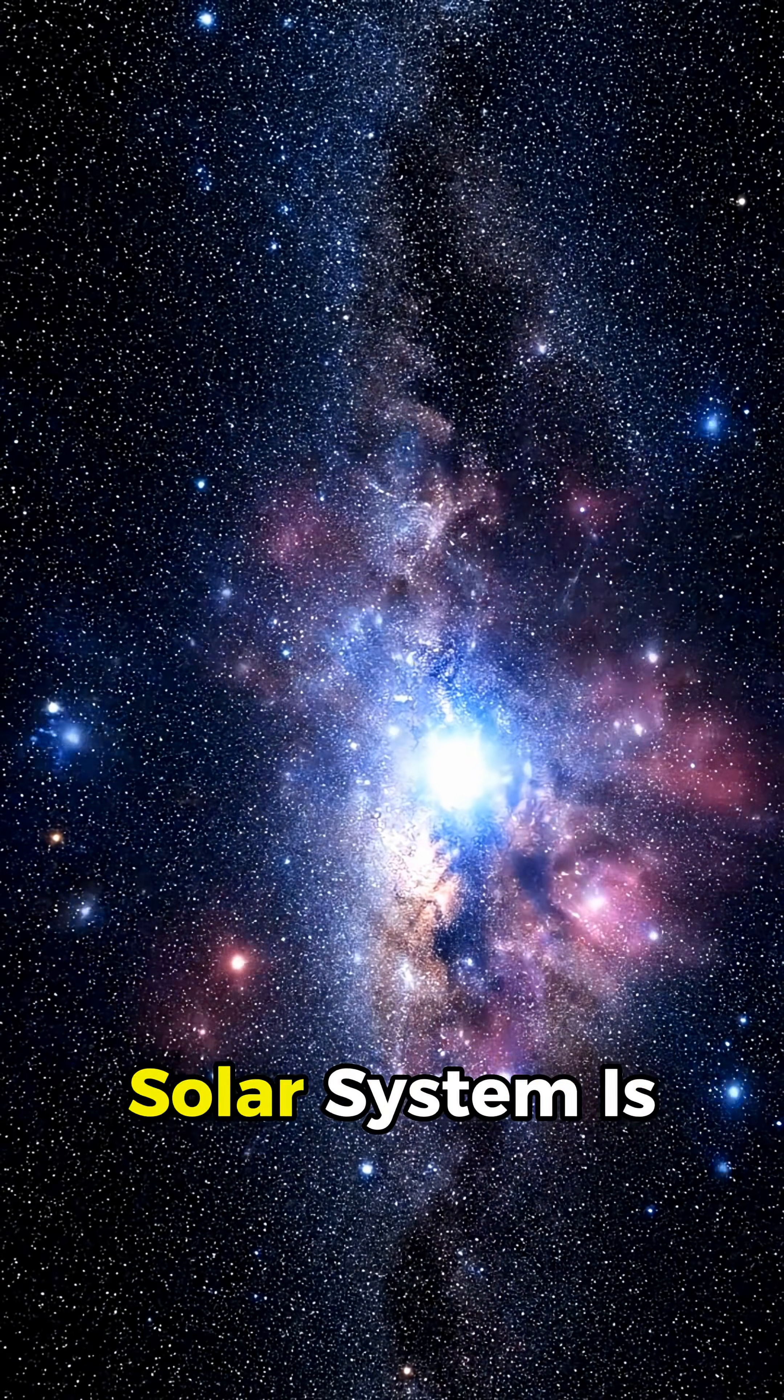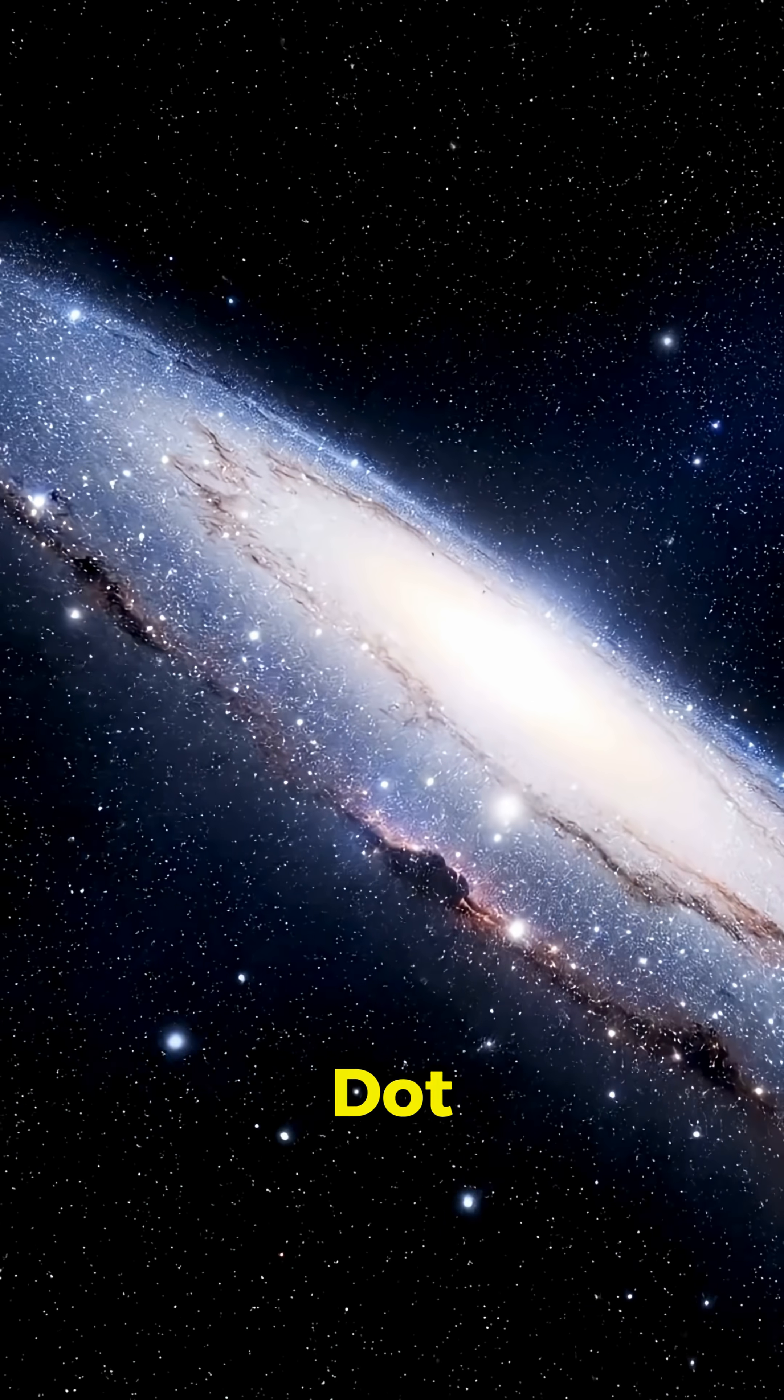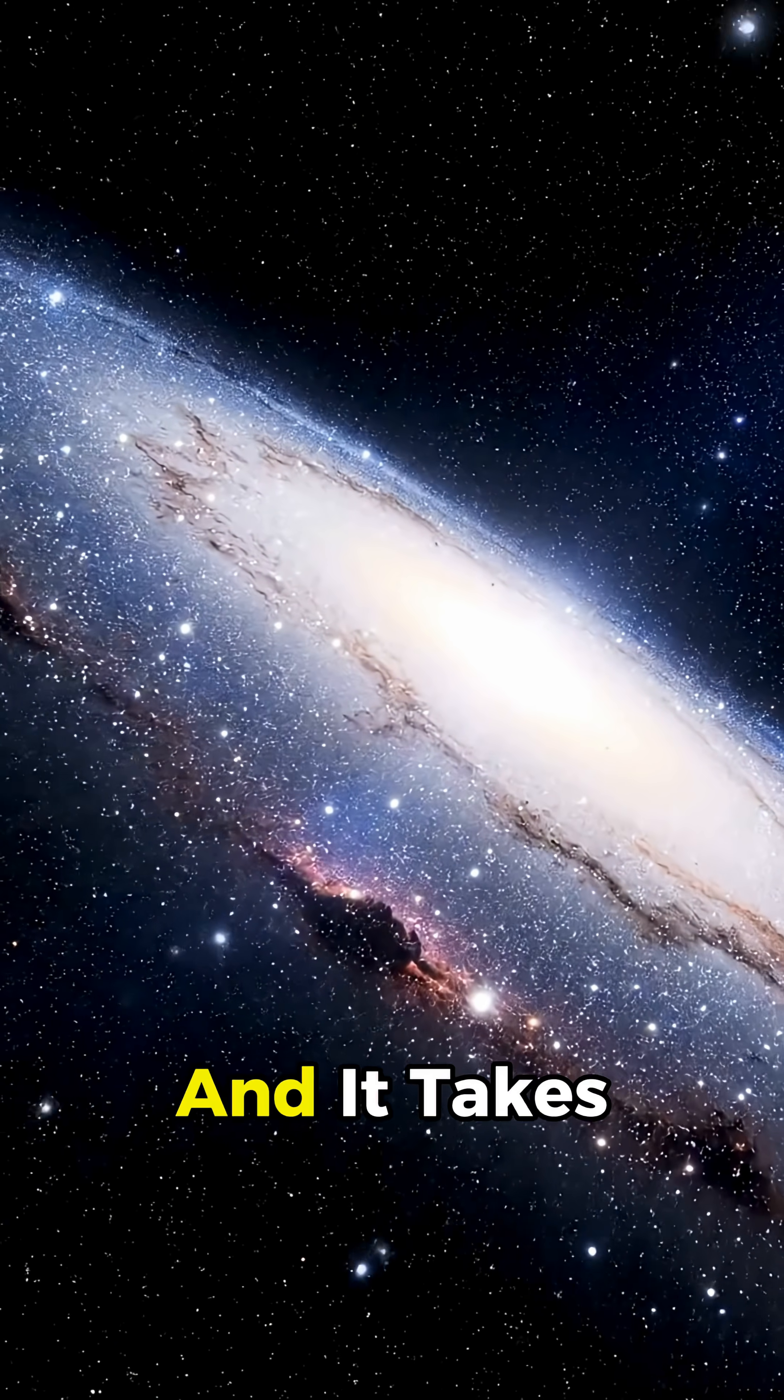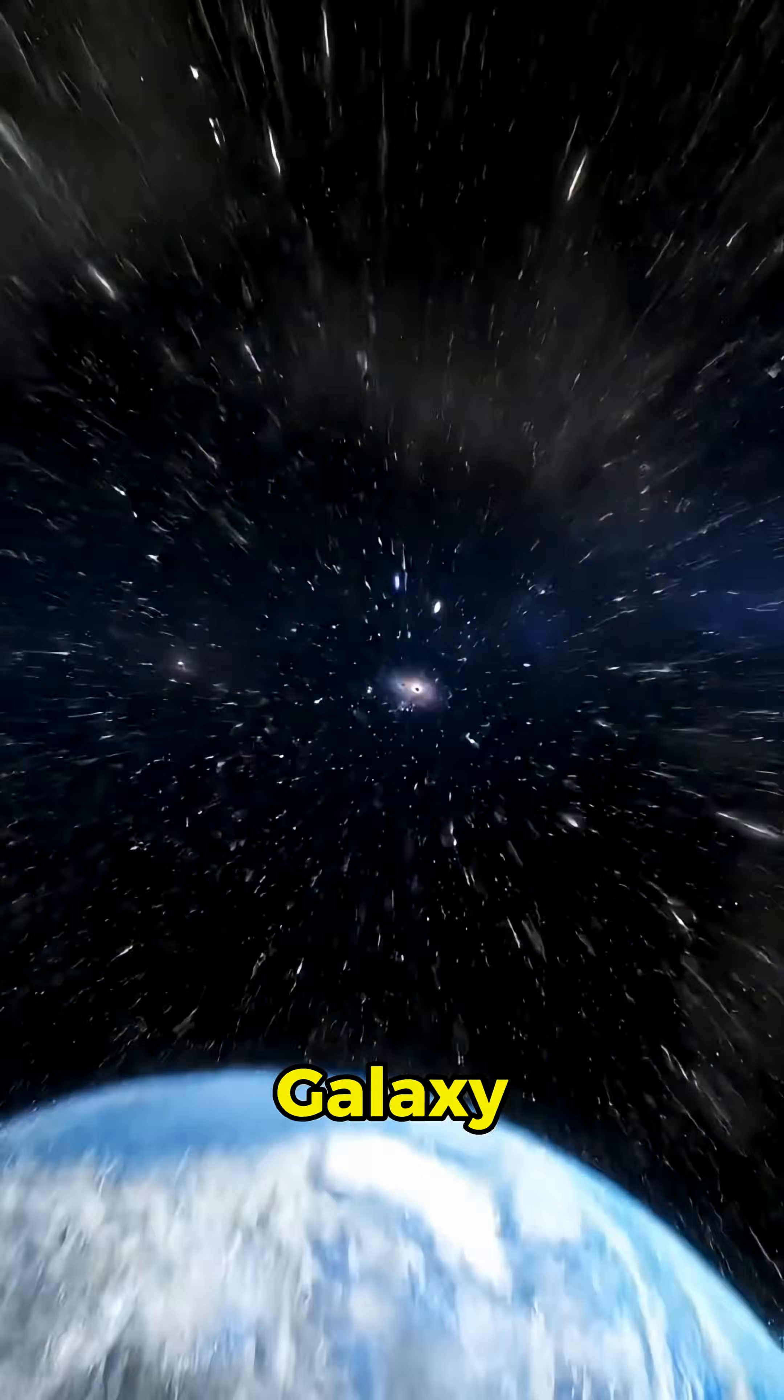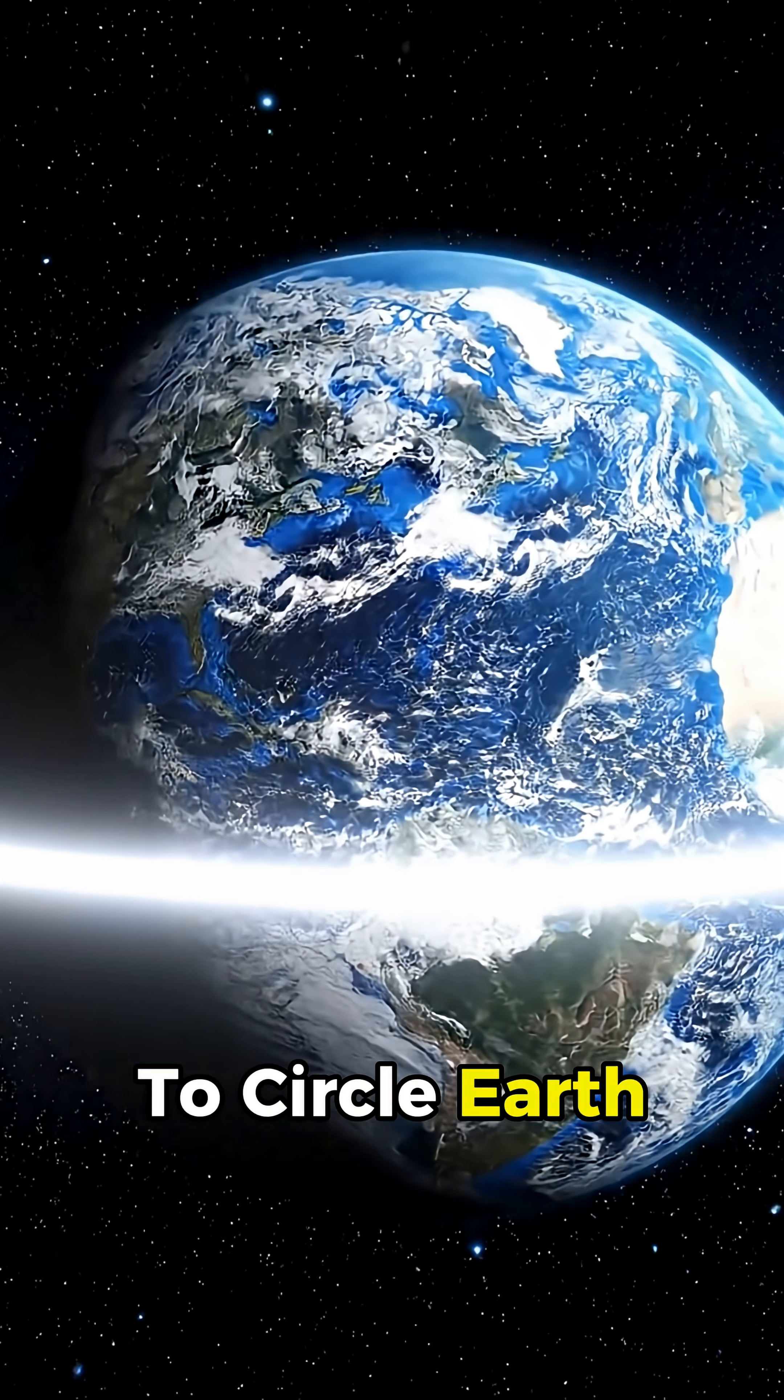Even our entire solar system is just a tiny dot inside one spiral arm, and it takes light 100,000 years to cross the galaxy, while it takes only a fraction of a second to circle Earth.